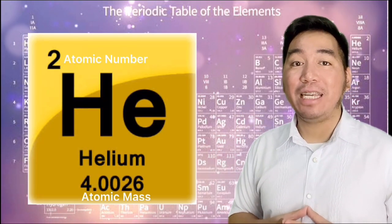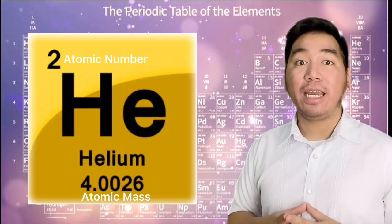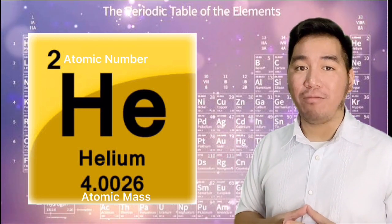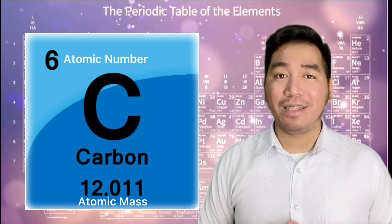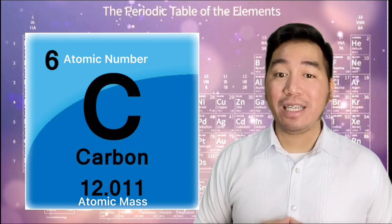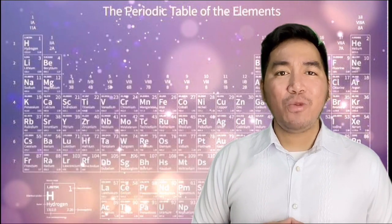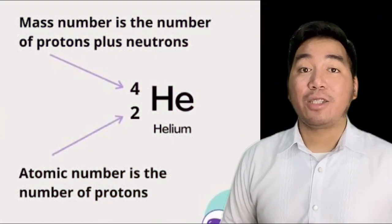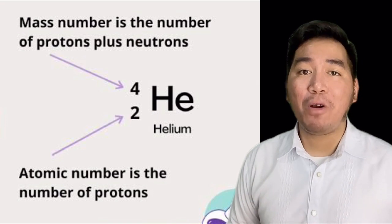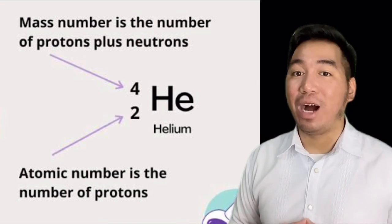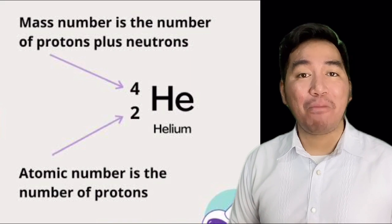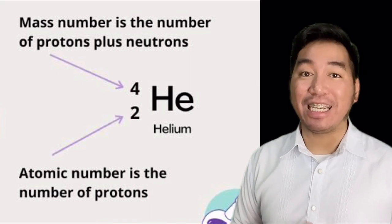For example, the atomic number of element helium is 2 and the atomic mass is 4. Same with the element carbon, the atomic number is 6 and the atomic mass is 12. So what is atomic number and atomic mass? Atomic number is the number of protons in an atom, while atomic mass is the number of protons and neutrons in an atom.